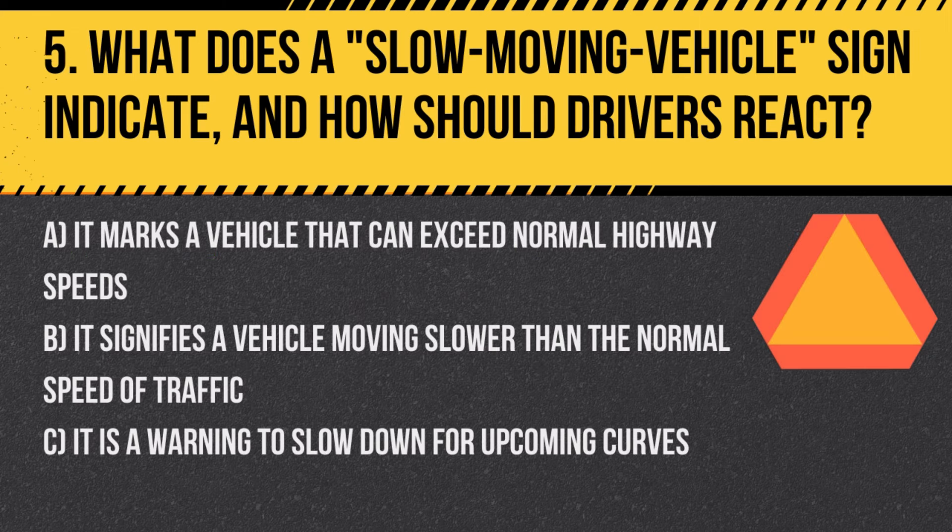Question 5: What does a slow-moving vehicle sign indicate, and how should drivers react? A. It marks a vehicle that can exceed normal highway speeds. B. It signifies a vehicle moving slower than the normal speed of traffic. C. It is a warning to slow down for upcoming curves. Answer: B. It signifies a vehicle moving slower than the normal speed of traffic. Drivers should be cautious and may need to pass the slow-moving vehicle when it's safe.